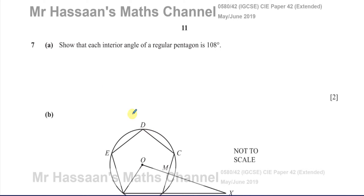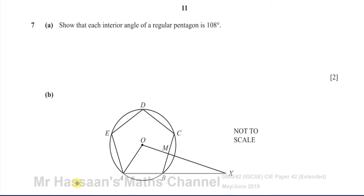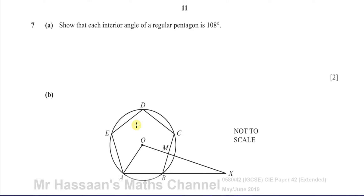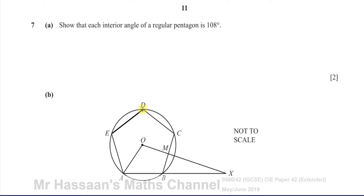Part A says: show that each interior angle of a regular polygon is 108 degrees. When you have polygons — and there's actually a pentagon here — I'll use this diagram to illustrate. You have interior angles, and you have what are called exterior angles. The exterior angles are the angles formed if you extend the lines on the outside like this.